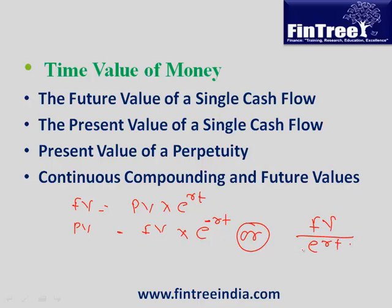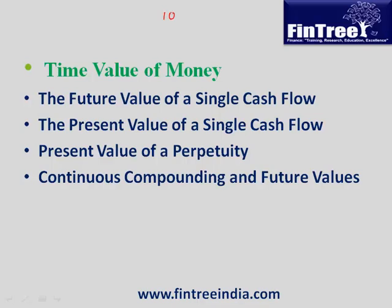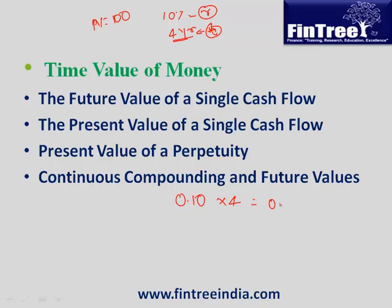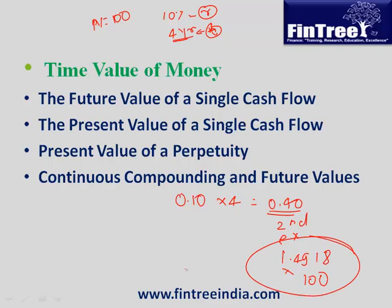On the calculator, if the interest rate is 10% and present value is 100 and you want the future value over four years: r is 0.10, t is 4. First compute 0.10 multiplied by 4 to get 0.40, then press second and e-to-x to get 1.4918, and multiply by the present value to get the future value.